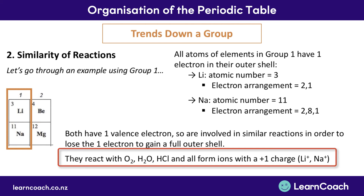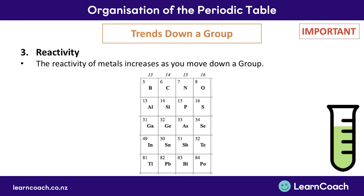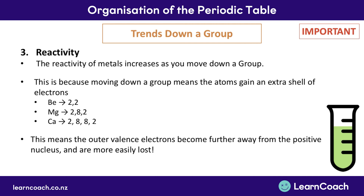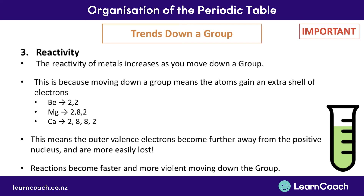The final trend is that as you move vertically down a group, the reactivity of the metals increases. Moving down a group means atoms gain an extra shell of electrons — for example, moving from beryllium to magnesium, a whole additional shell of 8 electrons is gained, and the same happens from magnesium to calcium. Gaining these shells means the outer valence electrons become further away from the positive nucleus, so they're more easily lost, making the metal more reactive and its reactions faster and more violent.